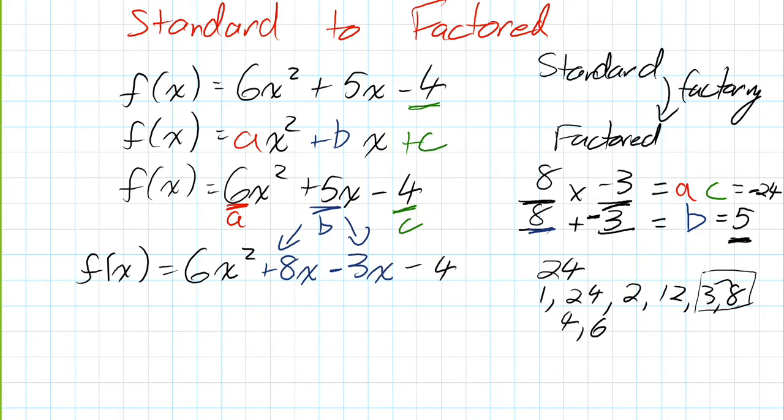So usually the next step now is we do a little bit of common factoring between the first two terms and the second two terms. So I got to look for a common factor in the first two terms. I know x can come out, but I also got to find the greatest common factor between 6 and 8. I think it's going to be 2. So I'm going to say I'm going to divide, or I'm going to common factor out, 2x. So 2x goes on the outside of the bracket.